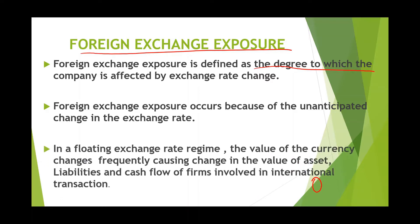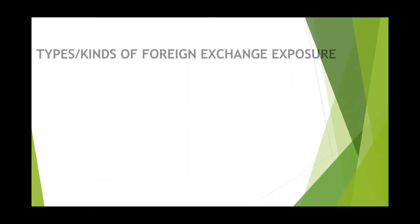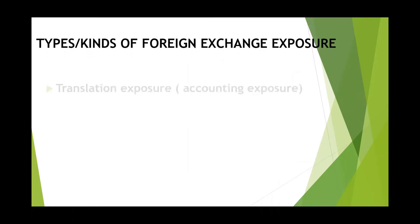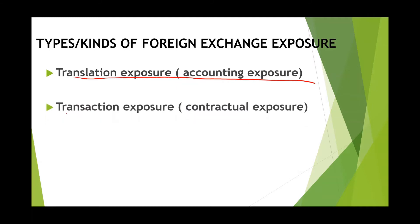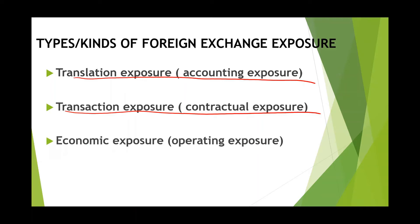Foreign exchange exposure occurs because of the unanticipated change in the exchange rate. Today we are living in the era of a floating exchange rate regime, where the value of currency changes frequently, and so the value of assets, liabilities, and cash flows of an international company also changes. There are three types of foreign exchange exposure: first, translation exposure, also called accounting exposure; second, transaction exposure, also called contractual exposure; and third, economic exposure, also called operating exposure.